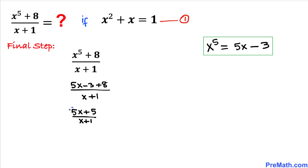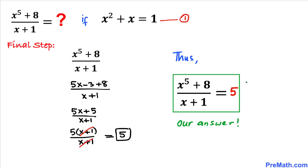We can see that 5 is a common factor in the numerator. Factoring out 5 gives us 5 times (x plus 1) divided by (x plus 1). The (x plus 1) terms cancel, and we simply end up with 5. So the value of the rational expression x to the power 5 plus 8 divided by x plus 1 is 5.